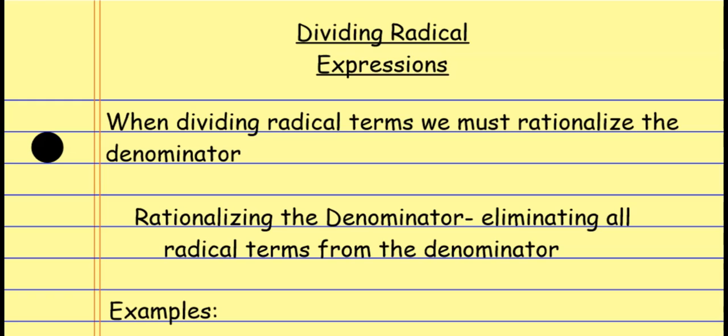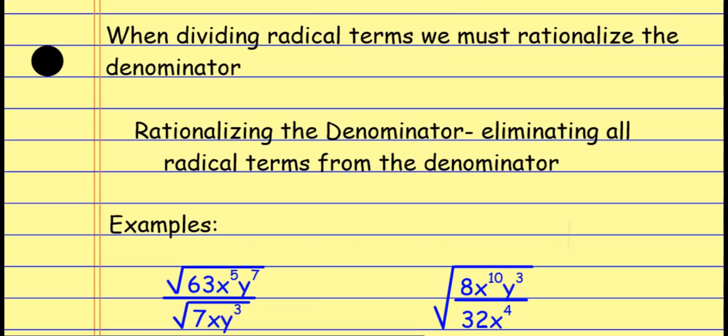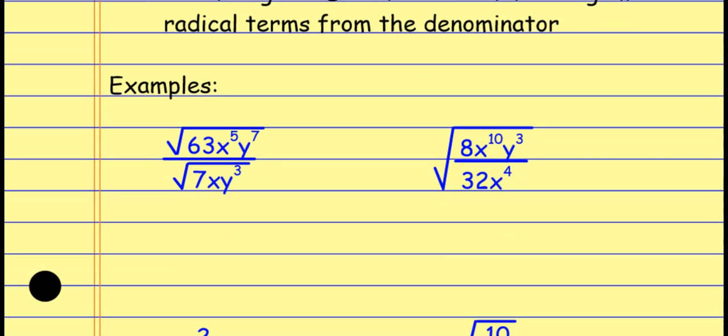When dividing radical terms, we want to rationalize the denominator, which simply means eliminating all radical terms from the denominator. This is kind of like getting common denominators. Always simplify first to see if maybe the denominator rationalizes itself — before multiplying by anything. This has two effects: we might get rid of the radical in the denominator just by simplifying, and it makes rationalizing easier by giving us smaller numbers to work with.